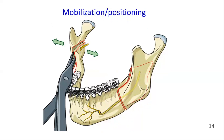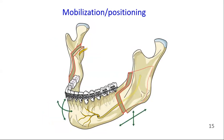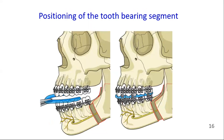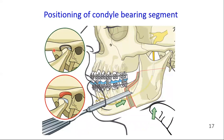A special bone spreader can be used to mobilize the segments. After the bilateral split is completed, the large tooth-bearing segment can be moved three-dimensionally. MMF is performed to position the large tooth-bearing segment to the desired relationship with the maxilla. A prefabricated surgical splint or wafer may be used to facilitate this. Care must be taken to maintain normal fossa-condyle relation and to avoid condyle displacement. Usually this is achieved by manual positioning of the condyle-bearing segment superiorly into the glenoid fossa.